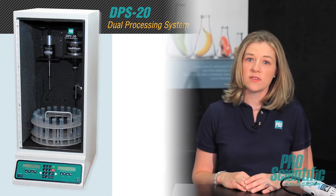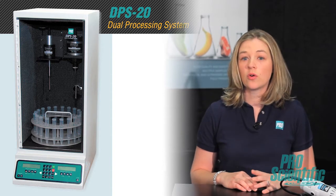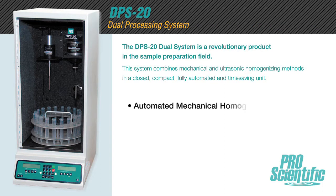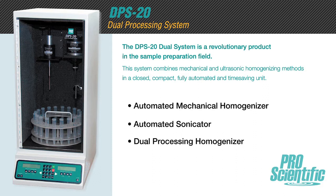DPS20's unique design allows the use of each homogenizing method dependently or independently of each other, which gives it three different configurations: automated mechanical homogenizer, automated sonicator, and dual processing homogenizer.